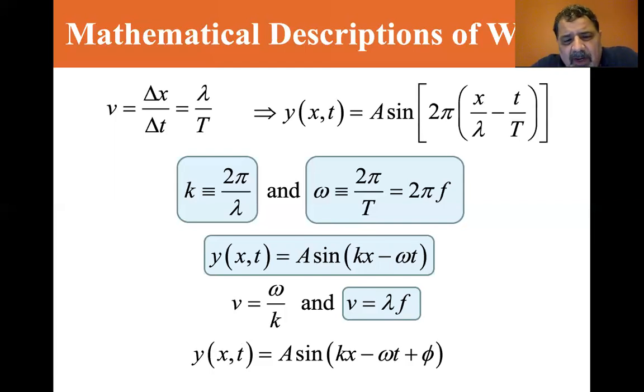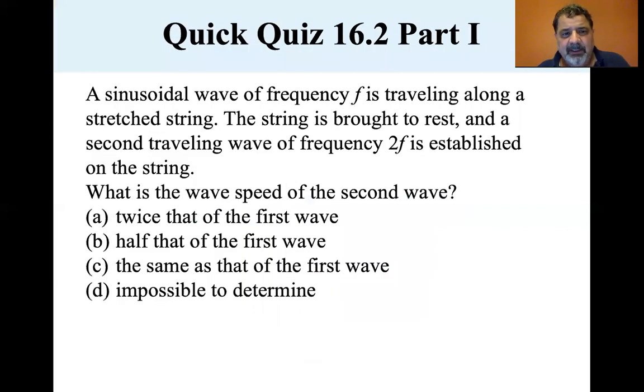Okay. So Y of XT is equal to A sine KX minus Omega T plus phi. The phi is a phase angle. Well, certainly right now I'm going through phase angles as we, in 2426 as we talk about AC circuits.